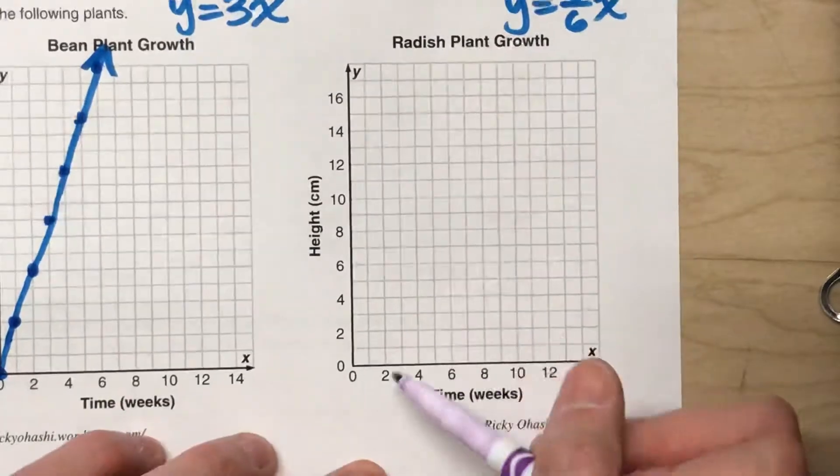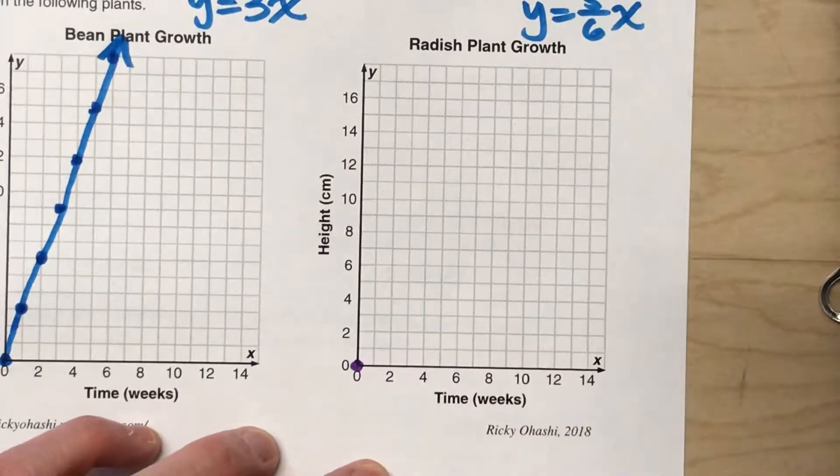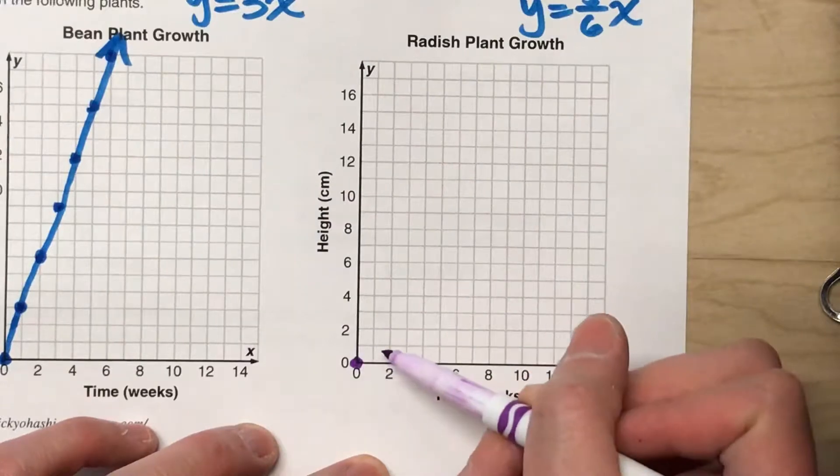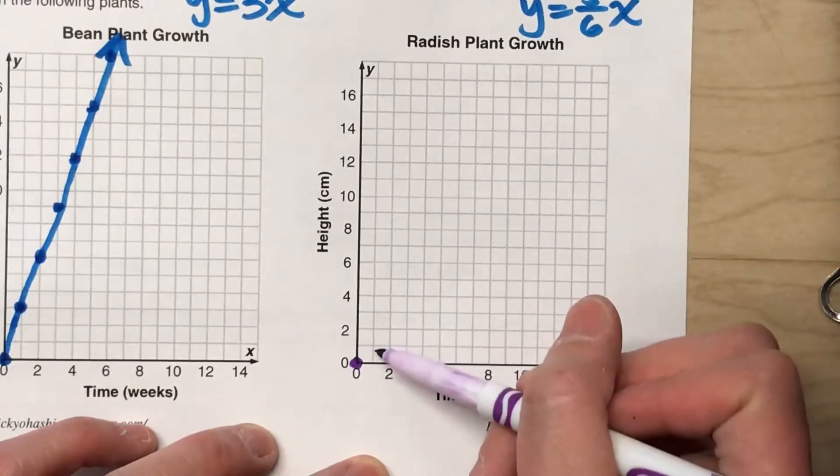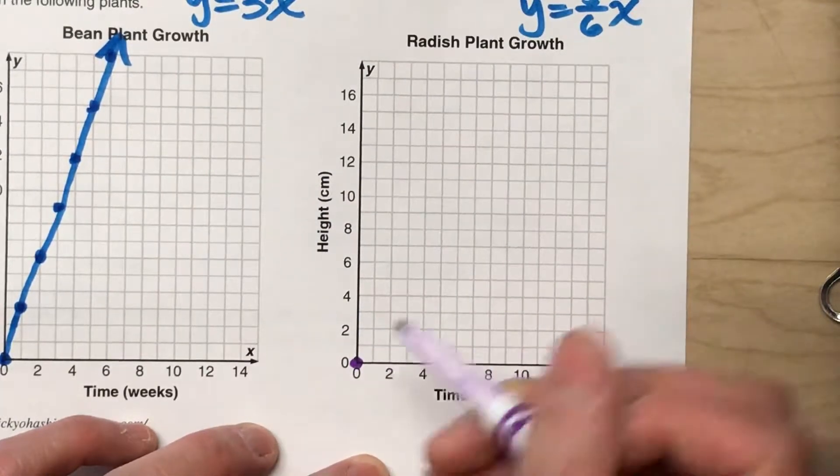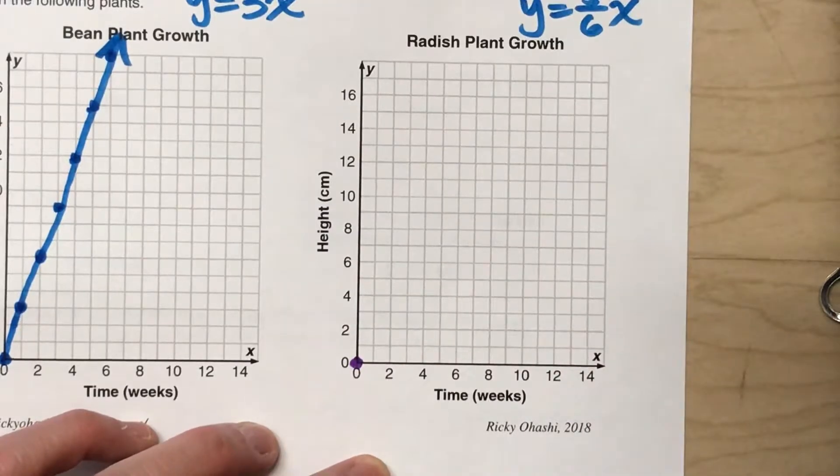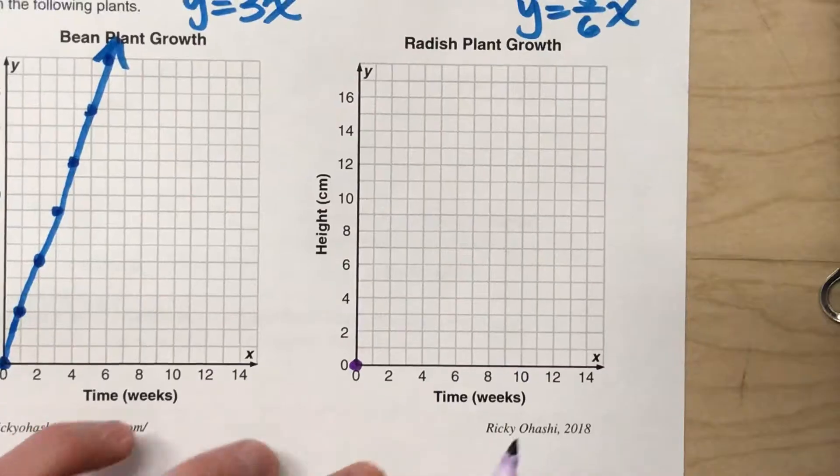So it starts at 0. And I would have to go up 5 sixths of a centimeter every week. The problem is, I don't know where 5 sixths is on this little graph right here because 5 sixths is really hard to plot.